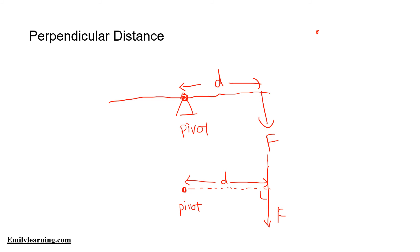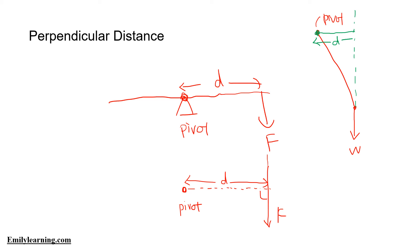What if I have a weight acting downward and my pivot is at a point not directly above it? Extending the line of the weight, the perpendicular distance from the pivot to that line of action gives the perpendicular distance to use in the moment calculation.